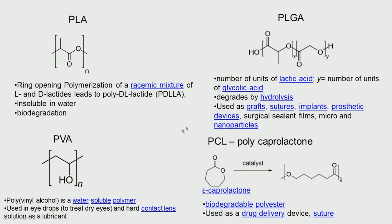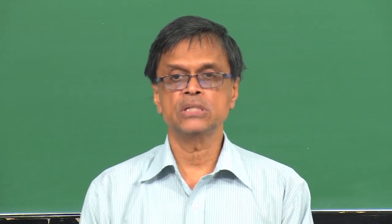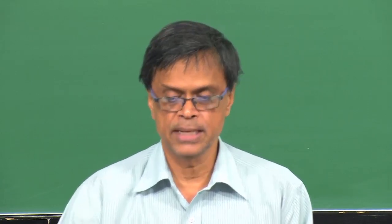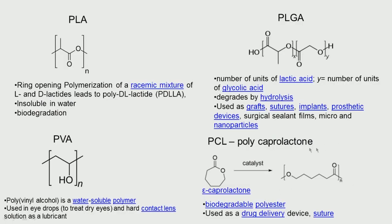Polycaprolactone (PCL) is a biodegradable polyester made by ring-opening polymerization of epsilon-caprolactone with a tin catalyst. It is FDA approved and used in drug delivery devices and sutures. Do not confuse it with polycaprolactam (almost like nylon — very strong, not degradable). Polycaprolactone (the lactone) is biodegradable and FDA approved.